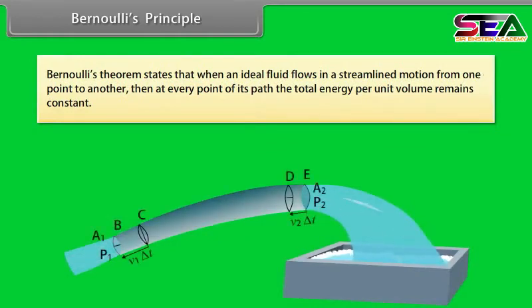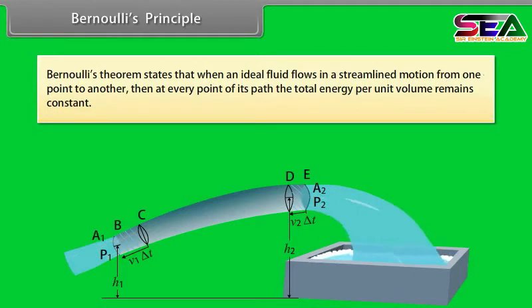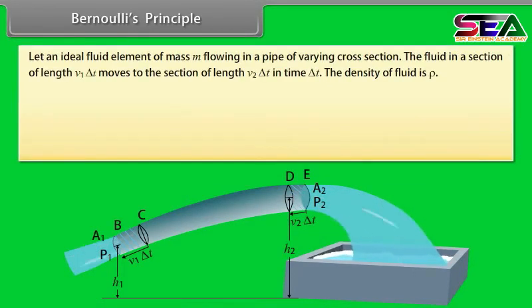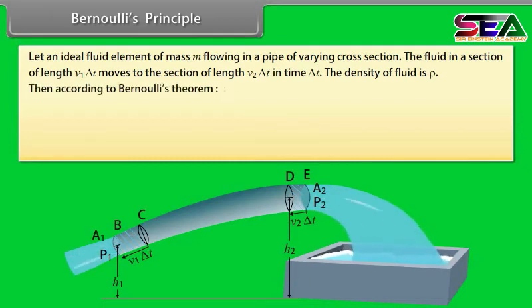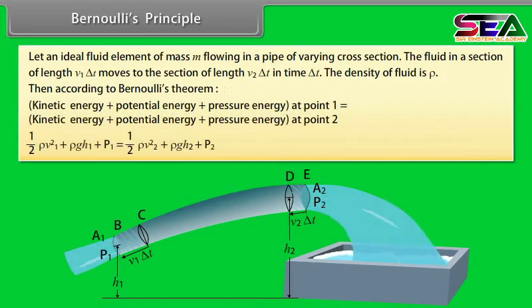Bernoulli's principle: Bernoulli's theorem states that when an ideal fluid flows in streamlined motion from one point to another, at every point of its path, the total energy per unit volume remains constant. Consider an ideal fluid element of mass M flowing in a pipe of varying cross-section. The fluid in a section of length V₁ΔT moves to a section of length V₂ΔT in time ΔT, with fluid density rho. According to Bernoulli's theorem, the sum of kinetic energy, potential energy, and pressure energy at point 1 equals the sum at point 2.